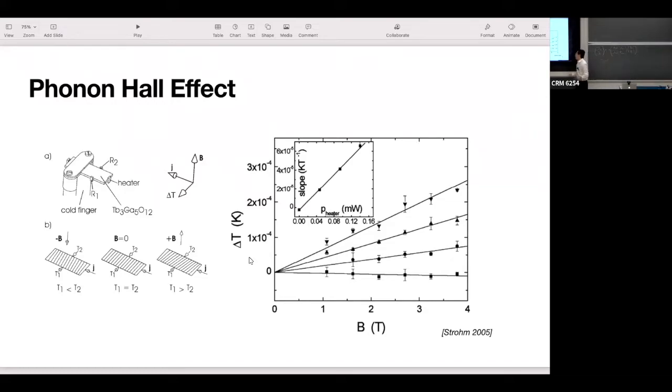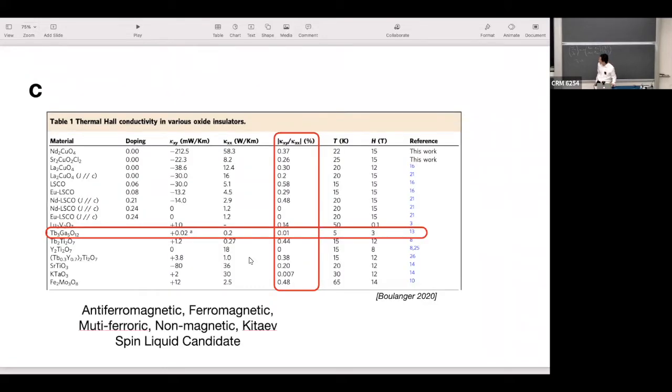Strom thought that in this case we have phonons, maybe phonons behave the same way, and so they roughly get the right magnitude using similar kinds of arguments. That's in 2005, and people were satisfied with their explanation and didn't care too much about it for a while.